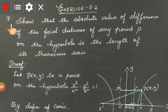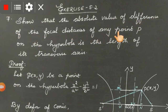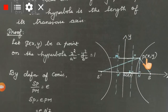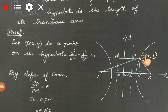Exercise 5.2: Show that the absolute value of the difference of the focal distances of any point P on the hyperbola is the length of its transverse axis. That is, |SP minus S'P| is equal to 2a, the length of the transverse axis. We will prove that |SP minus S'P| = 2a.